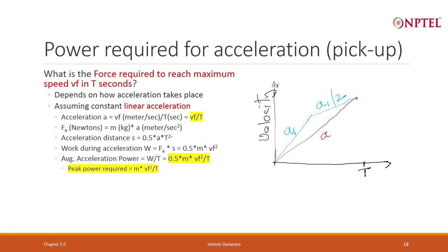What is the work done during acceleration? Force into distance — using the old physics formula — and that comes to 0.5mv². What is the average acceleration power? Total work done divided by the time, so it comes to half mv²f divided by t.